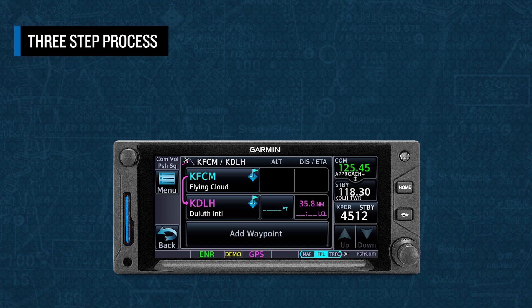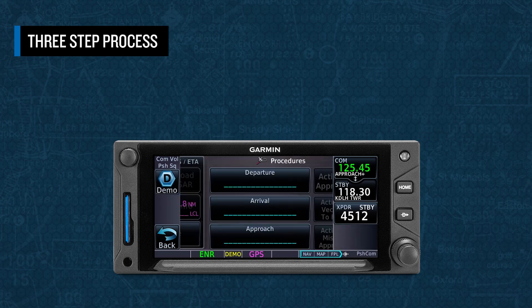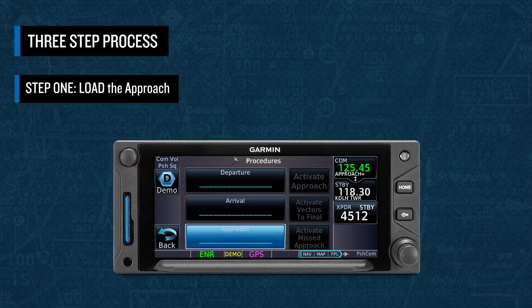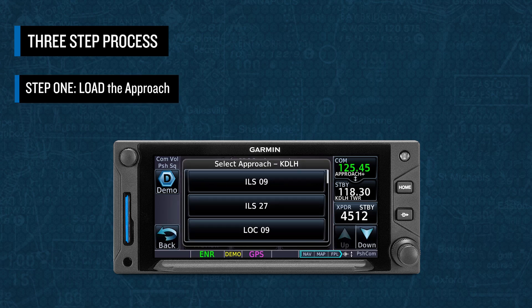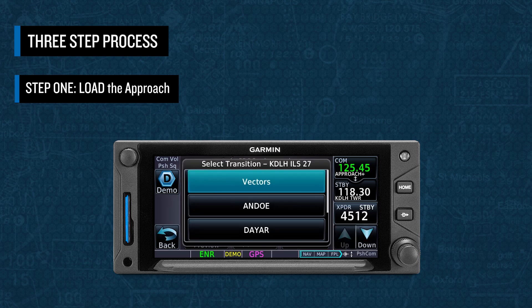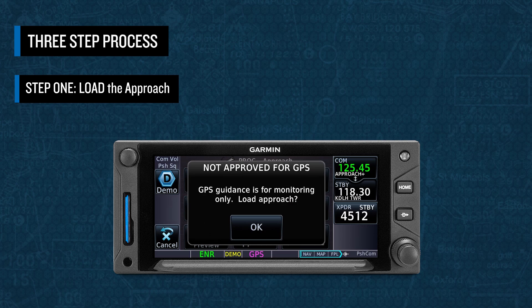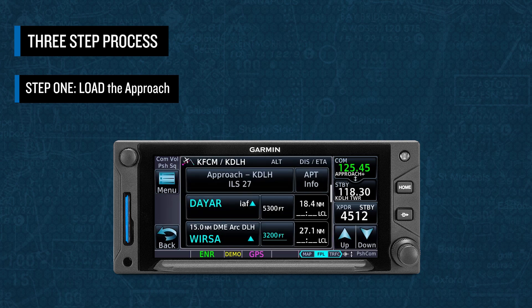Executing a coupled approach involves a three-step process with discrete triggers for each step. First, you have to load the approach. You can do this as soon as you know which approach to expect, either based on the wind direction at your destination or ATC guidance. Step one is to load the approach when you know which approach you want or expect.